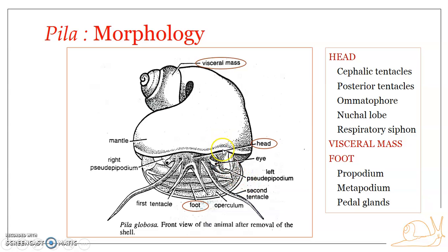The labial palps — the first pair of tentacles — as well as the omatophores and the posterior tentacles: all three structures, the first and second pair of tentacles and the omatophore, can be protruded as well as retracted as and when required by Pila. These are the structures associated with the head region.